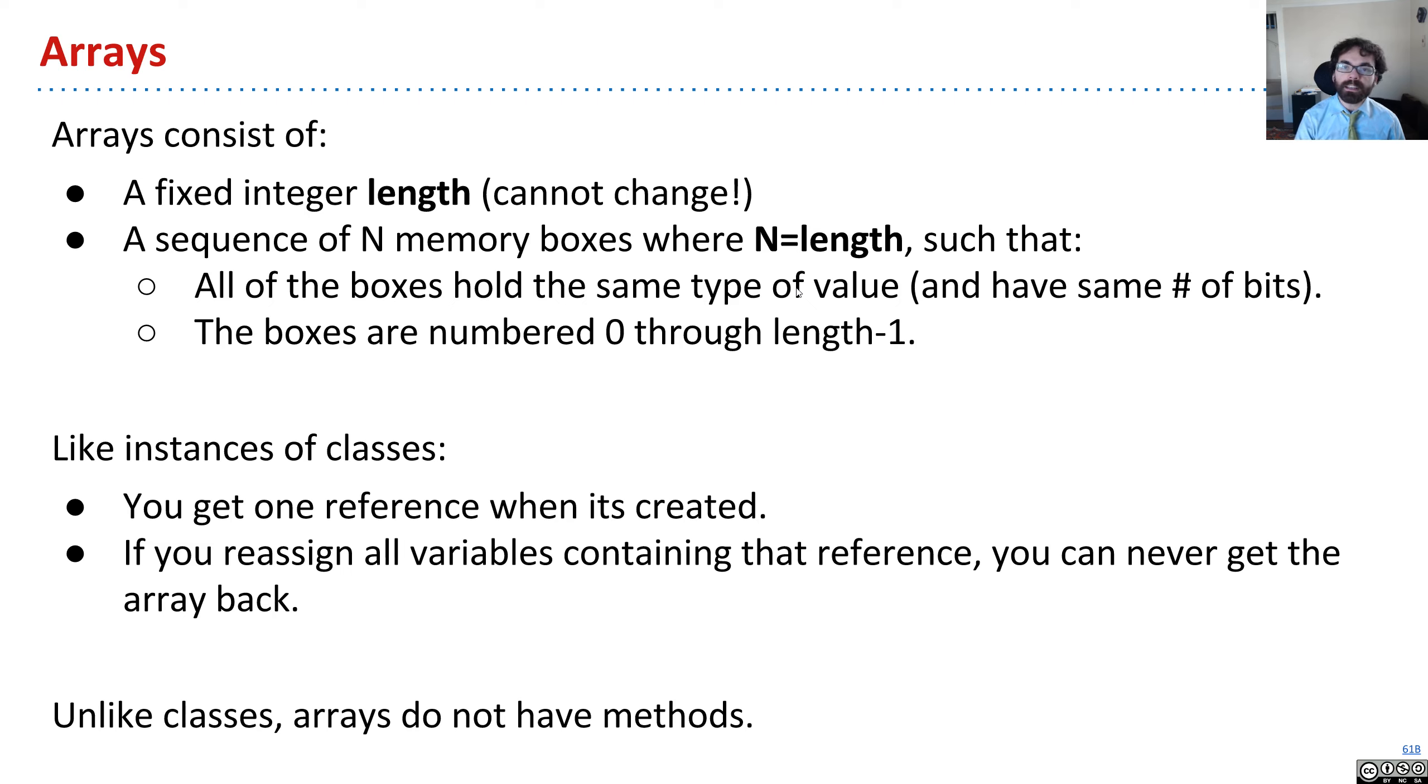Now, just like a class, whenever you instantiate an array, you get one reference at the time it's created. And if you throw away your only reference to that array, just like any class instance, you will never be able to get it back. The garbage collector will eat it up, and that's it.